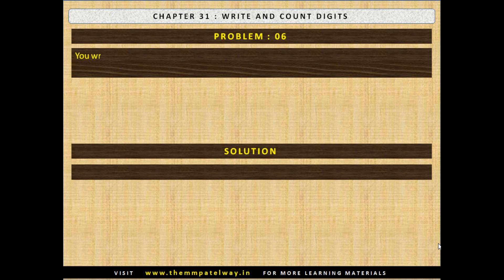Problem No. 6: You write all two-digit numbers on a paper. How many odd numbers will you write? Now stop the video and find the solution. The solution follows: you will write 45 odd numbers.